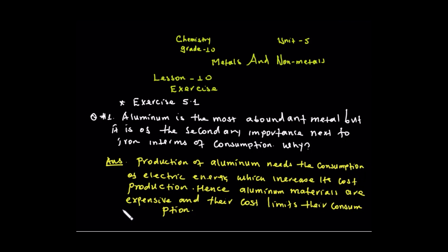The consumption of electric energy increases the cost. The electric energy costs many other costs. The cost of production is high. Aluminium materials are expensive and their costs limit their consumption.